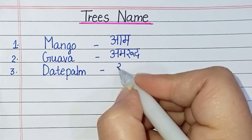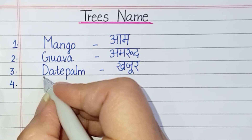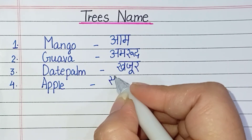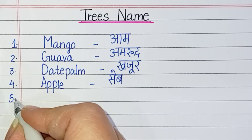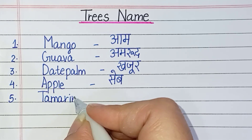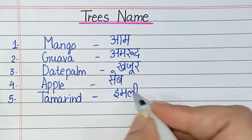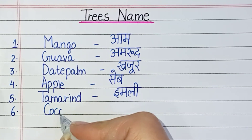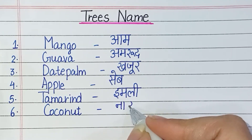Number four: A-P-P-L-E, apple, means seb. Number five: T-A-M-A-R-I-N-D, tamarind, means imli. Number six: C-O-C-O-N-U-T, coconut, means nariel.